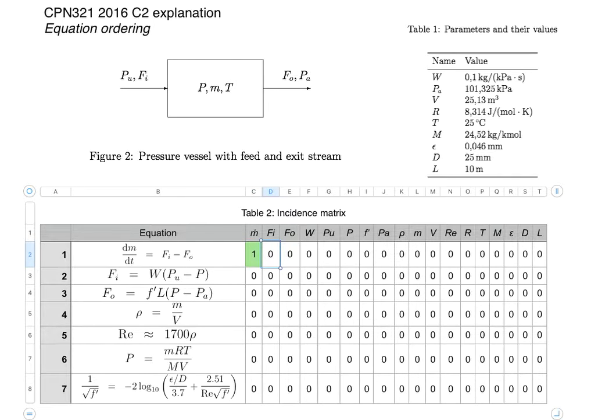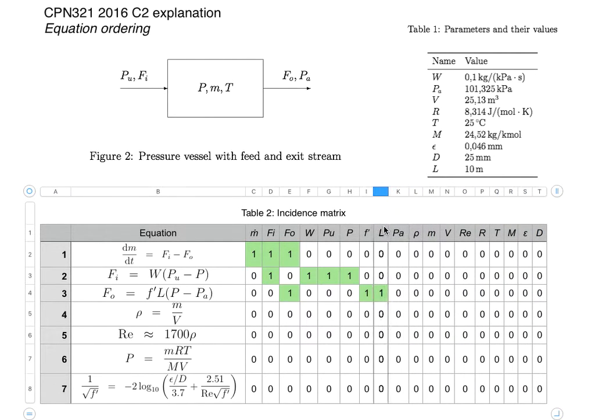So we see that the m dot does occur in equation 1. We see that fi occurs, fo occurs, and that's the only three symbols. In the next equation we see fi occurs again, along with w, p_u and p. And now we can simply carry along with this process. You'll see approximately I've listed the symbols in the order in which they appear in the equations. So we can basically go through.